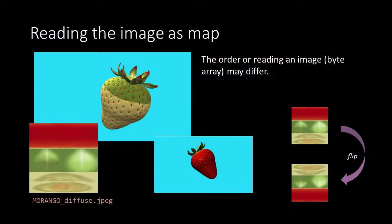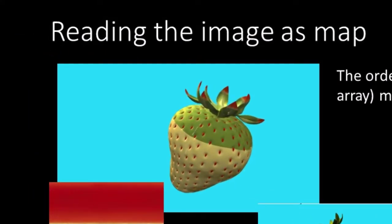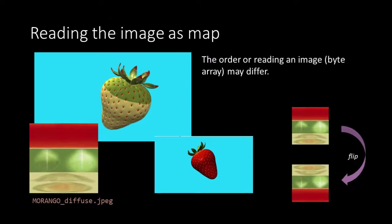However, if we do so we encounter a problem. You can see in the upper image that the texture is no longer mapped in the right order. As a result we see a sort of striped strawberry instead of the red strawberry we expected. This is because the bytes in the byte array, which is the image, are read in the reversed order.